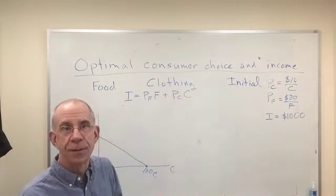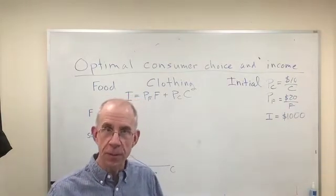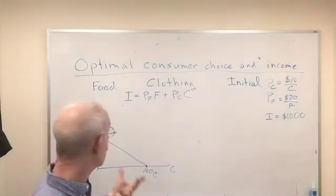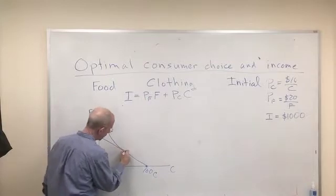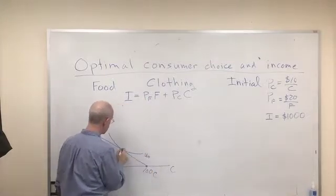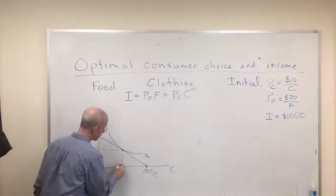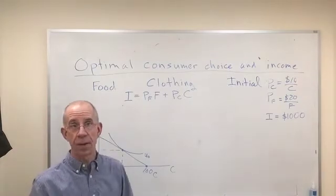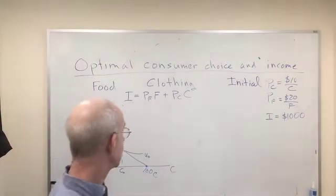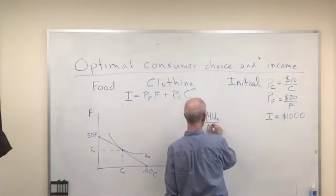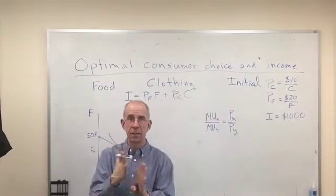With their $1000 of income they could buy 100 units of clothing. Now oftentimes when you have the choice of food or clothing you probably want both, so we're assuming that they do indeed want both of these goods. The choice will be somewhere on this budget constraint where they consume some of both goods. I wanted to pick that initial situation where we have an indifference curve that's tangent and we've got an amount of F that's purchased and we've got an amount of C that's purchased where they're maximizing their utility subject to this budget constraint. If you recall, we have the marginal utility of X over the marginal utility of Y is equal to PX over PY. That's where this indifference curve is tangent.